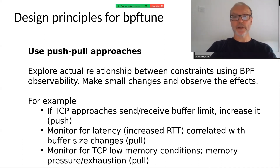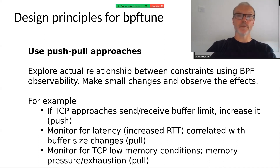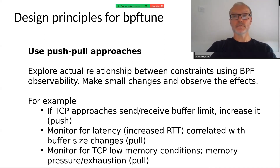If we see latency in the form of increased round trip times in TCP, and specifically if that's correlated with our increases in buffer size, we want to pull the value back down for the send/receive buffer size. Similarly, we don't want to result in memory exhaustion — if we keep increasing those limits, each socket has more memory associated, and we can hit TCP low-memory conditions like memory pressure or memory exhaustion. So it's a balancing act between constraints that push up a value, like hitting a limit, and other constraints that might make that increase unwise, like running short of memory or inducing latency.